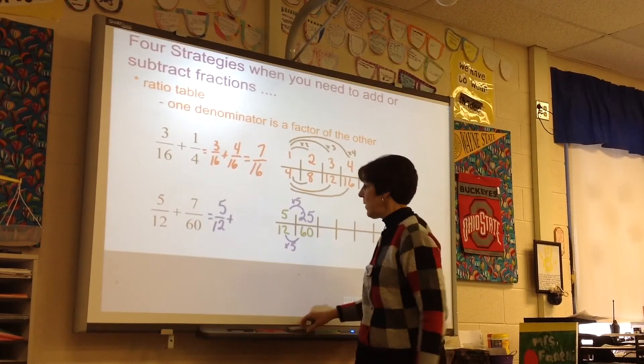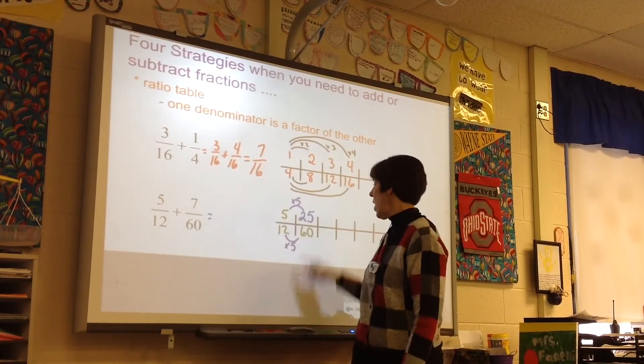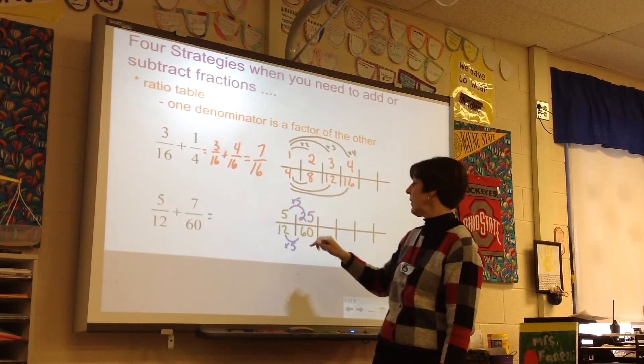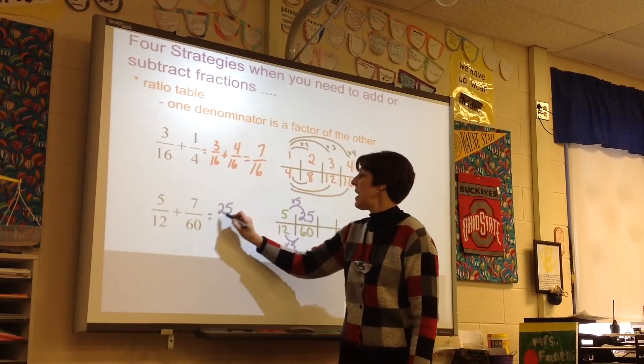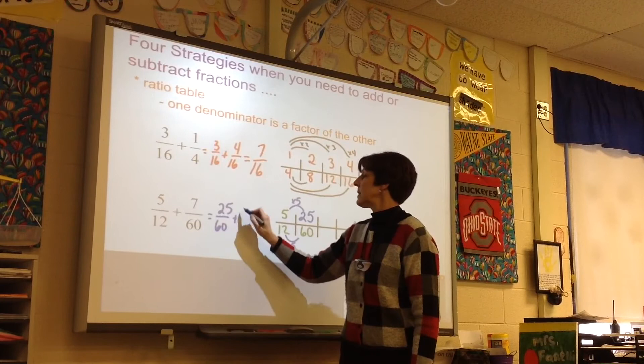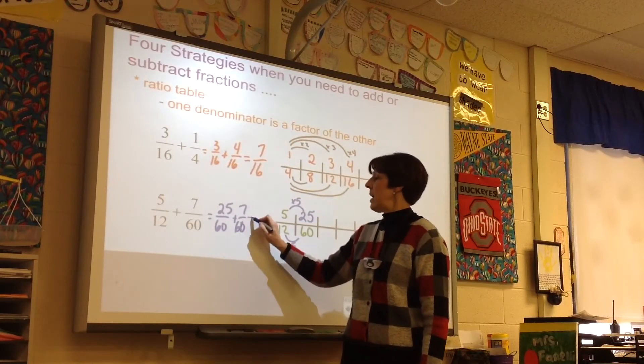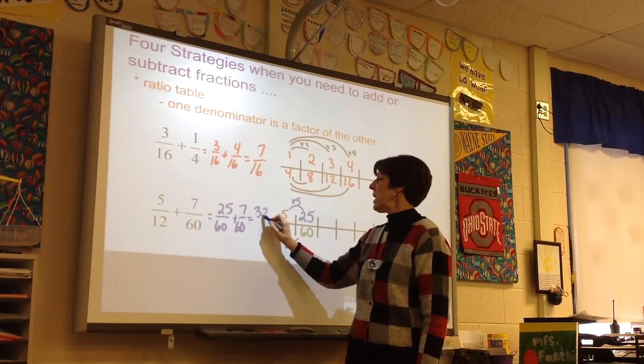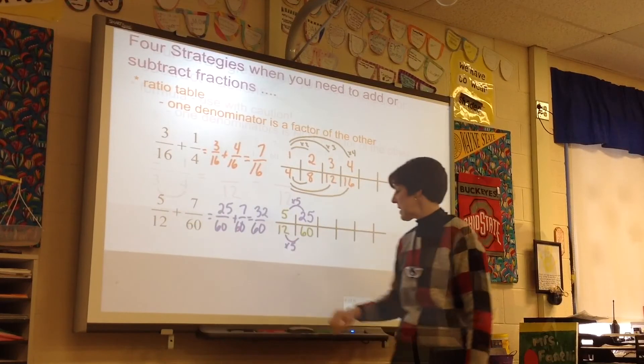Nope, that would be incorrect. It would be the substitution. The equivalent fraction would be 25 sixtieths plus 7 sixtieths. Now we have the same denominator for 32 sixtieths.